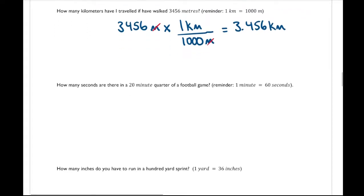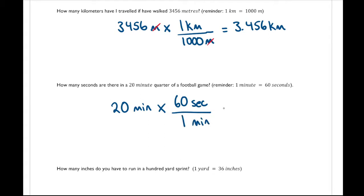Next: how many seconds are there in a 20-minute quarter of a football game? We start with 20 minutes and multiply by the unit rate: 60 seconds over 1 minute. The minutes cancel, and we get 20 times 60, which is 1,200 seconds.